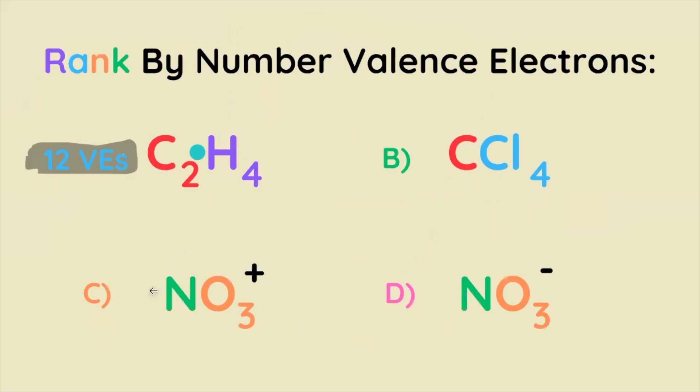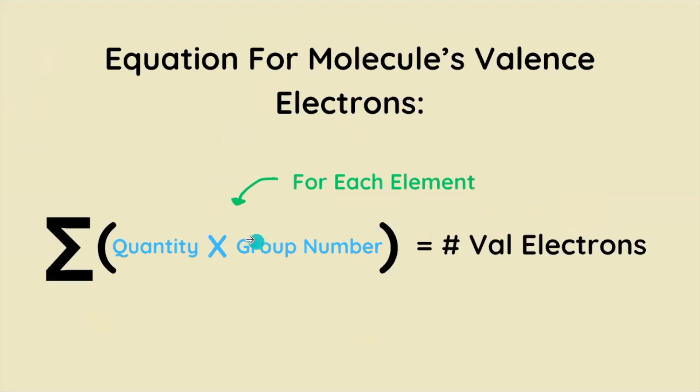In fact, we can use this equation to find the number of valence electrons for each of our molecules, or any molecule, where we multiply the quantity and the group number for each element present in the compound, and then we have to add them together.